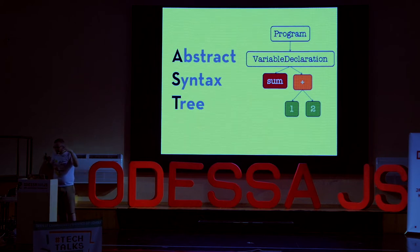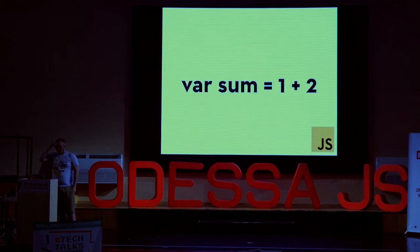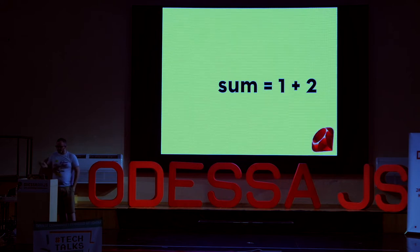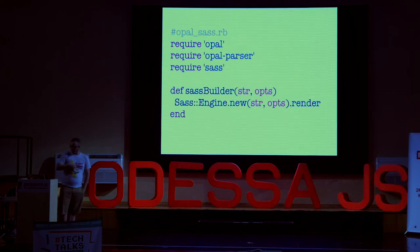An AST represents the entire concept of your program. Once we have our AST, we can convert from one language to another. So in this case, our incredibly complex JavaScript program can be converted to Ruby just by stripping off that 'var' — and hooray, we've done it. So now that we have a rough understanding of what transpilation is, we can dig into actually converting Sass into JavaScript.